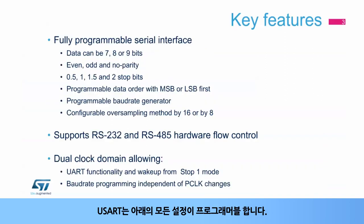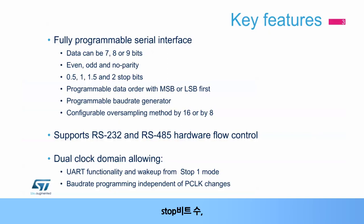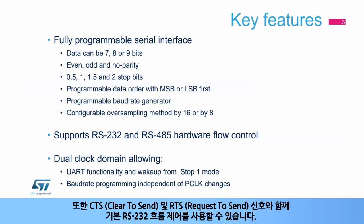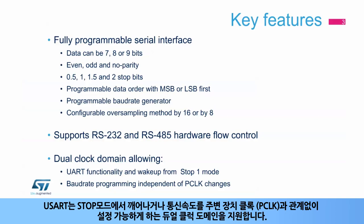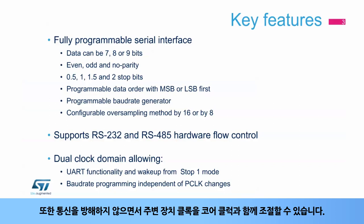The USART is a fully programmable serial interface featuring programmable data length, parity, number of stop bits, data order, baud rate generator, and configurable oversampling mode by 8 or by 16. You also have the option to use basic RS-232 flow control with CTS or clear-to-send, and RTS or request-to-send signals. The RS-485 DE or driver-enabled signal is also supported. The USART supports a dual clock domain, allowing wake-up from stop mode and baud rate programming independent of the peripheral clock or PCLK, allowing the peripheral clock to be throttled along with the core clock without disrupting communications.